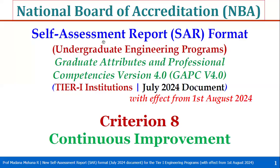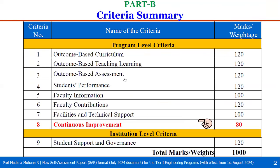Welcome to National Board of Accreditation, NBE, Self-Assessment Report Format for Undergraduate Engineering Programs under Tier 1 Institutions with July 2024 document. In this video, we will see Criterion 8, Continuous Improvement. In our earlier videos, we covered Program Level Criterias, Criteria 1 to 7. Now we will see Criteria 8, Continuous Improvement. Total Weightage is 80.